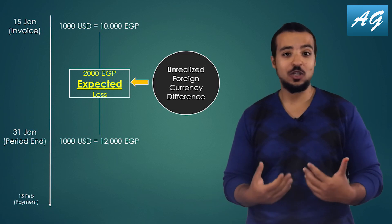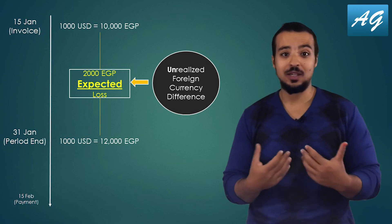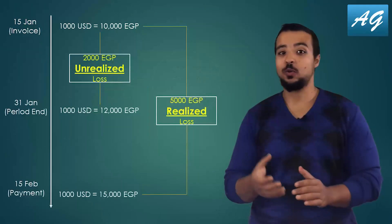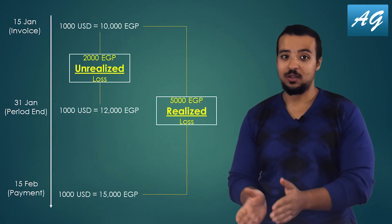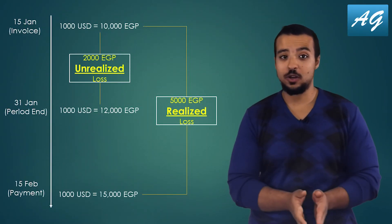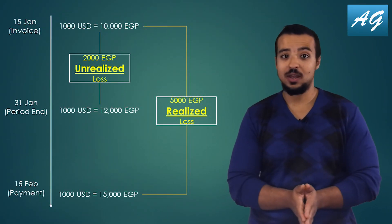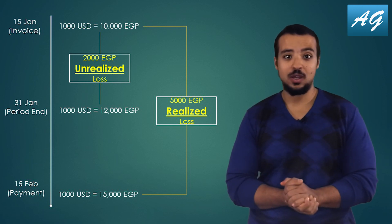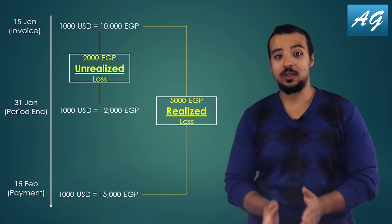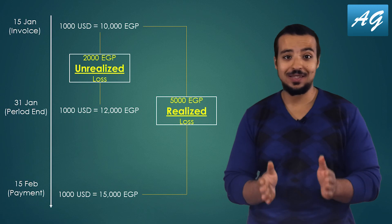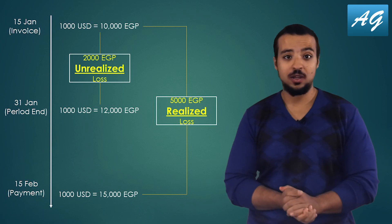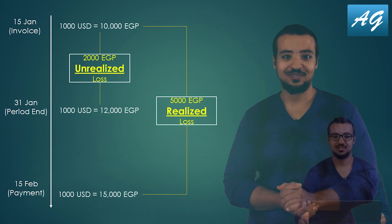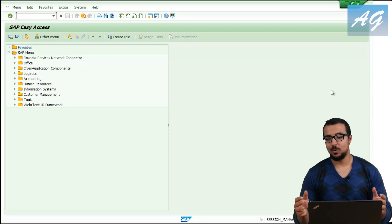It is called unrealized because we have not paid the supplier yet, so we have not actually lost any money yet — but it is an expected loss. Now I'm going to demonstrate the process in SAP S4HANA, which will help you understand more about this topic.